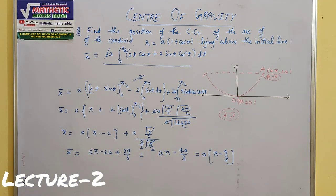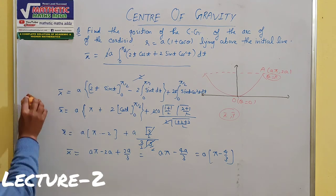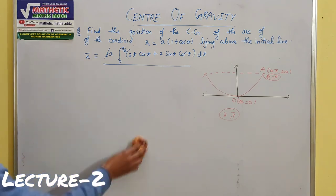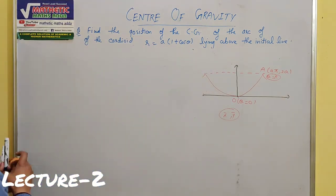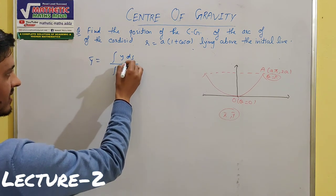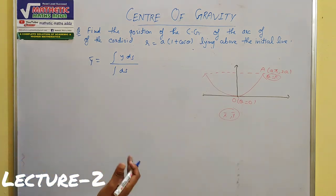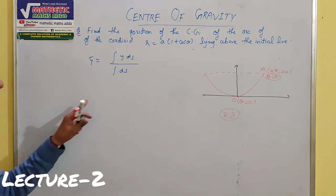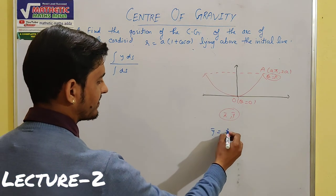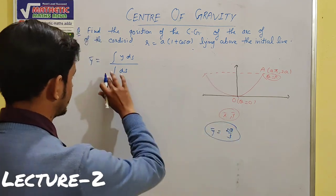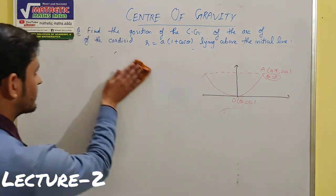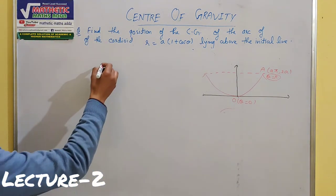Similarly, you need to find the y-coordinate. Write ȳ = ∫y·ds / ∫ds. Substitute ds = 2a·cos(θ/2)·dθ and the given y value; the limits are still 0 to π. Simplify, and the value of ȳ comes out to be 2a/3 — solve this yourself and you will easily get the answer. Now let me give a hint for the first question.